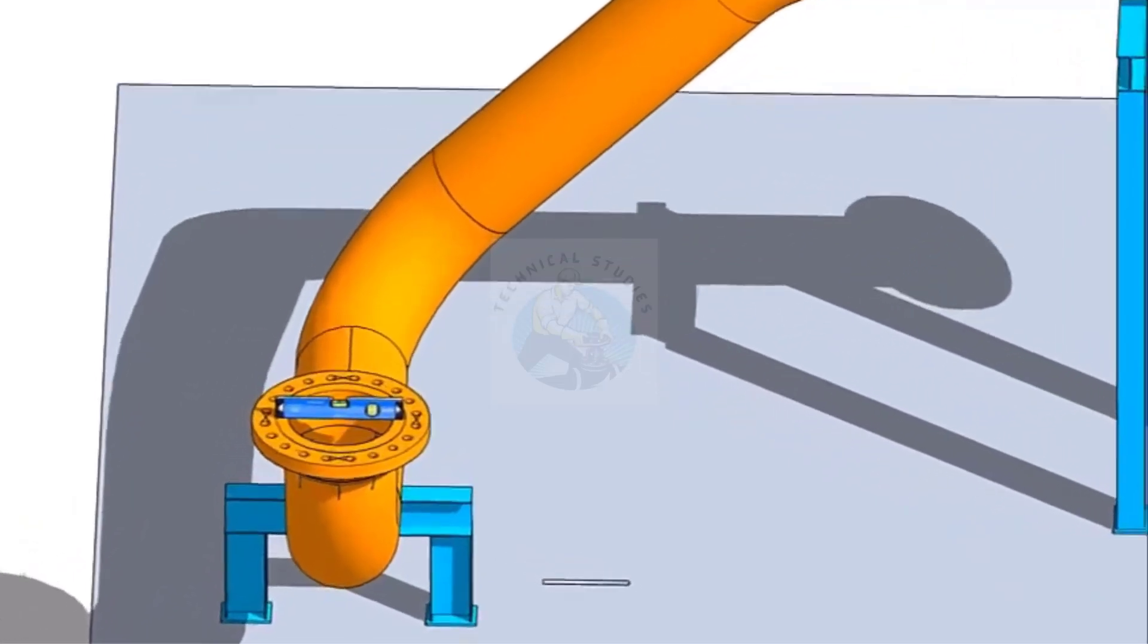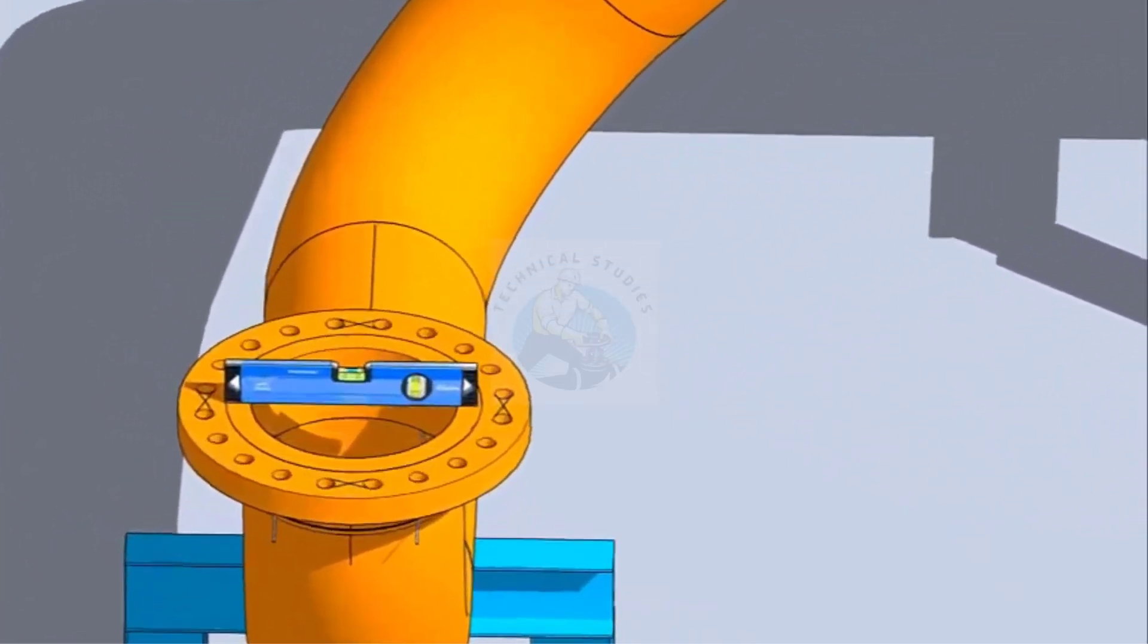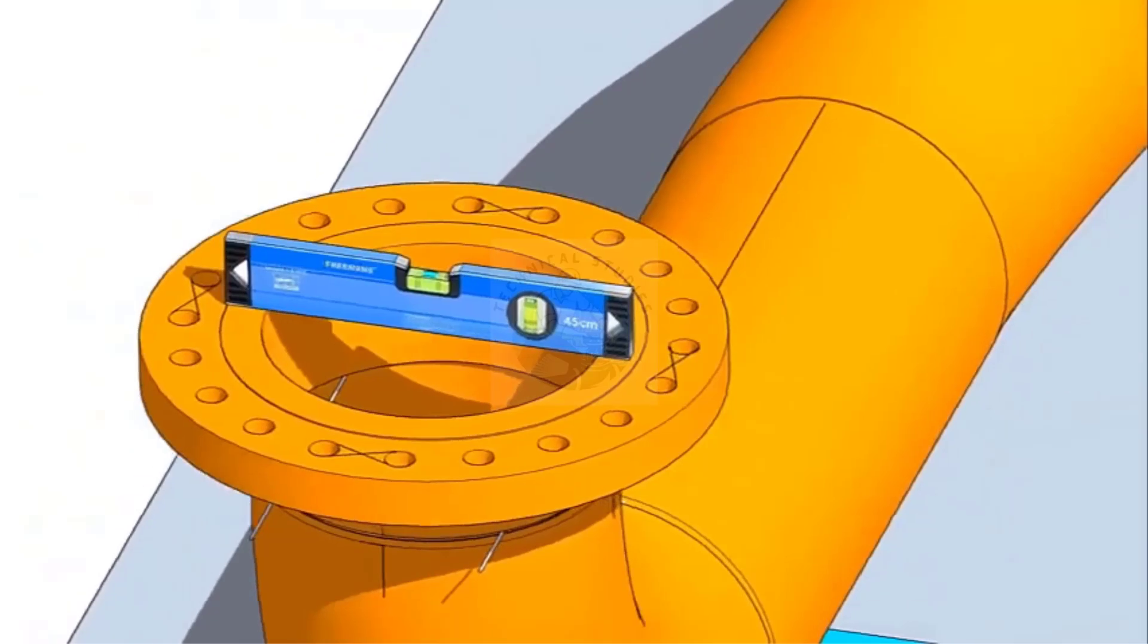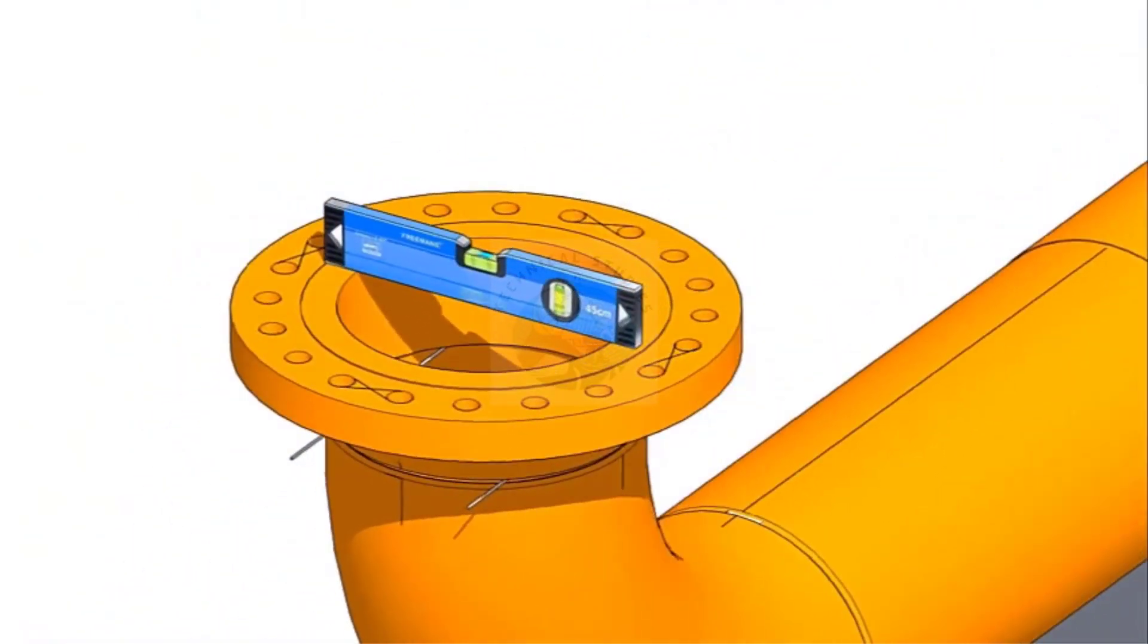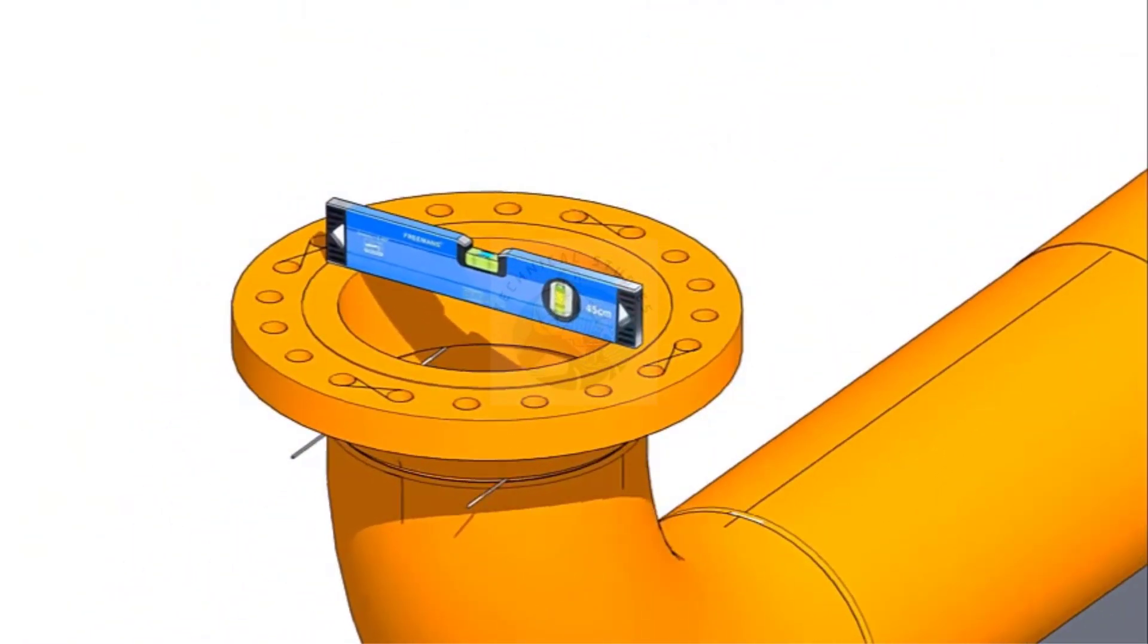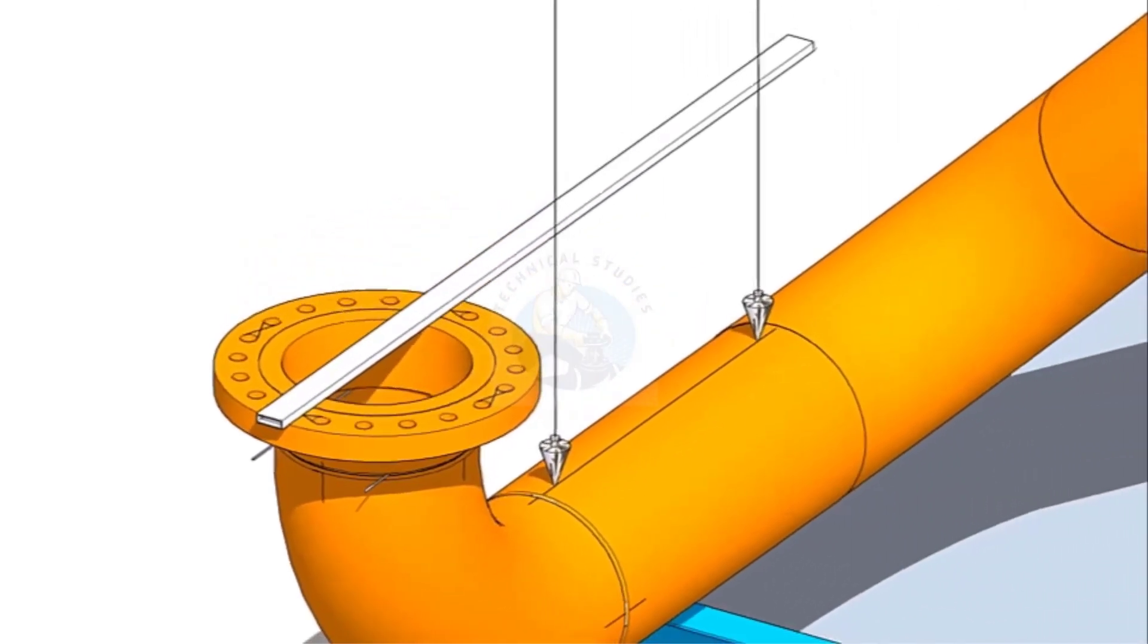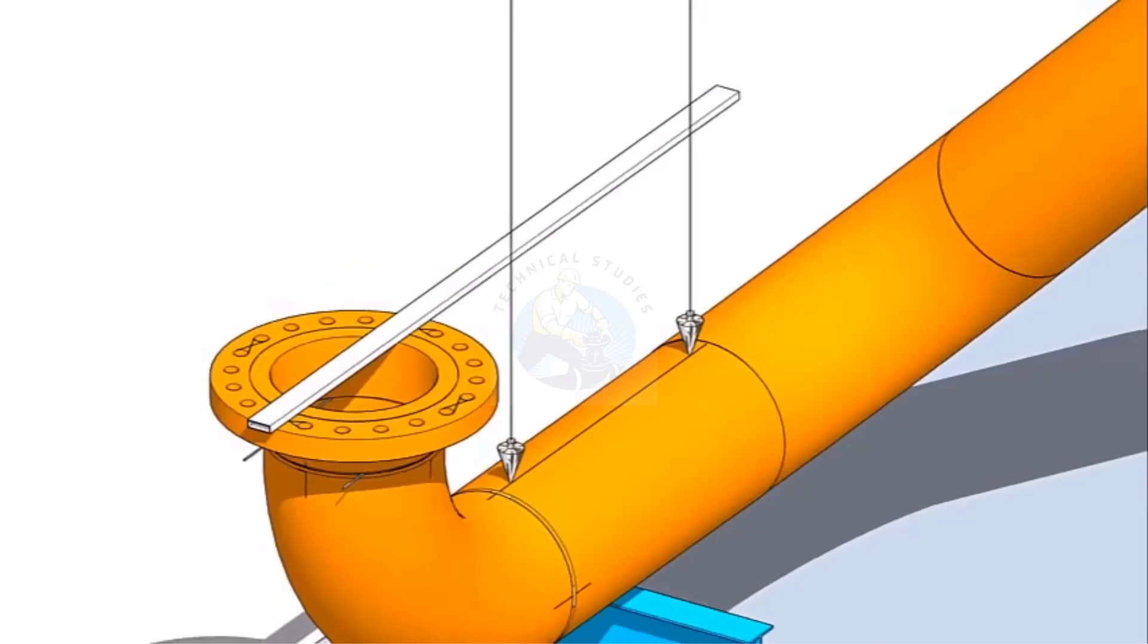Check the transverse level of the flange. Now, put the straight edge on the flange face longitudinal to the pipe centerline as shown. The edge of the straight edge must be sitting exactly on the centerline of the flange.